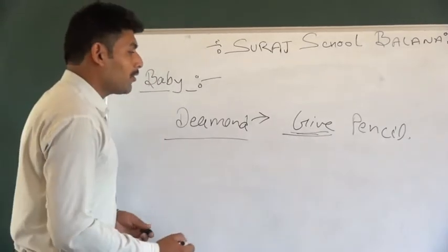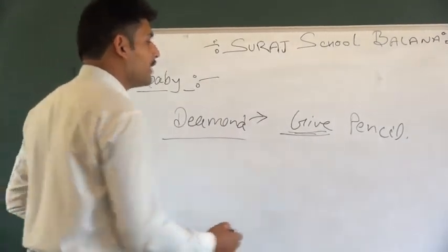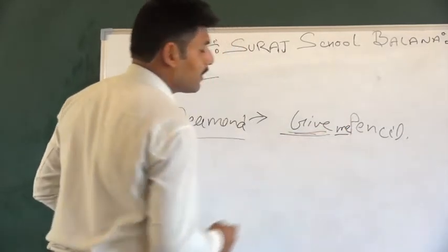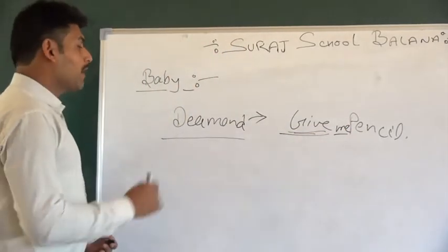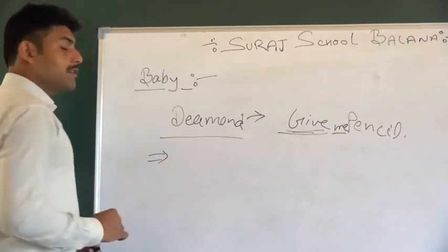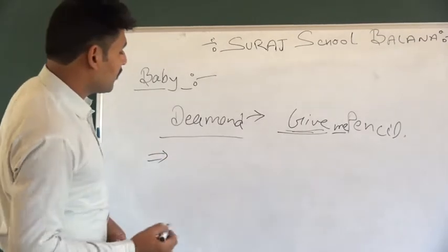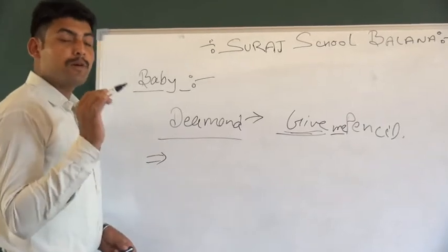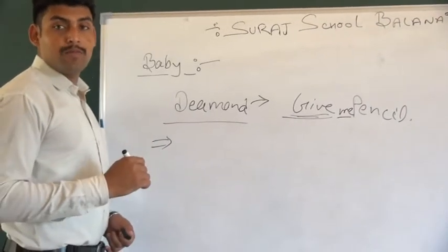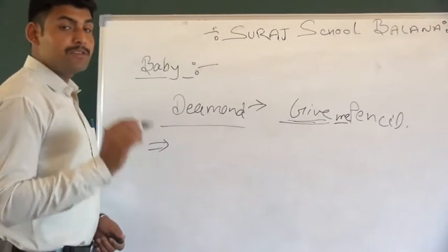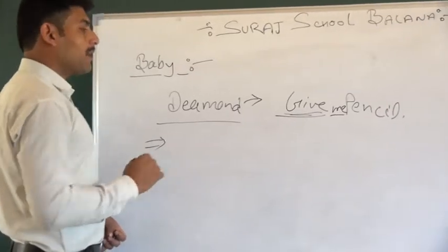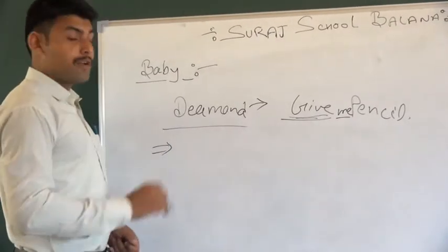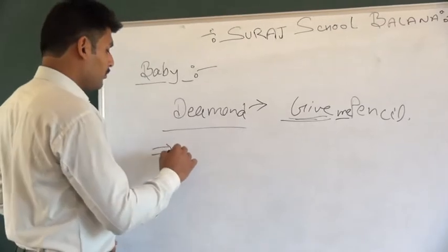If you want to demand, we will use that person for whom we are demanding. We will demand for the person we are asking. If you want to demand something, then we will demand for you.